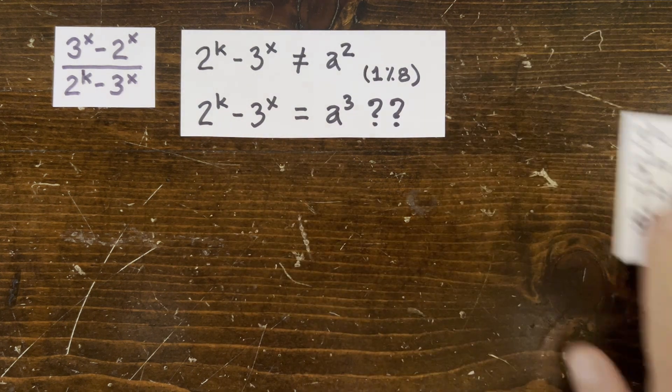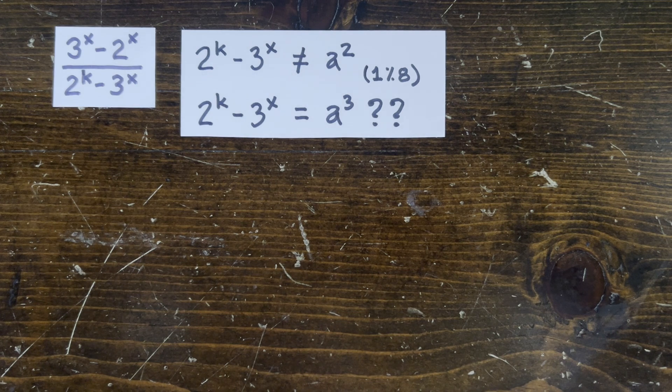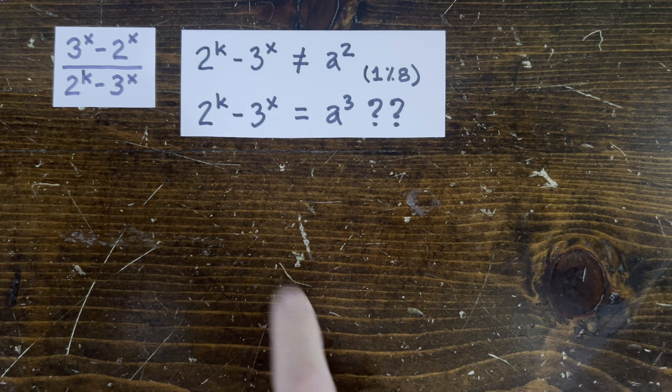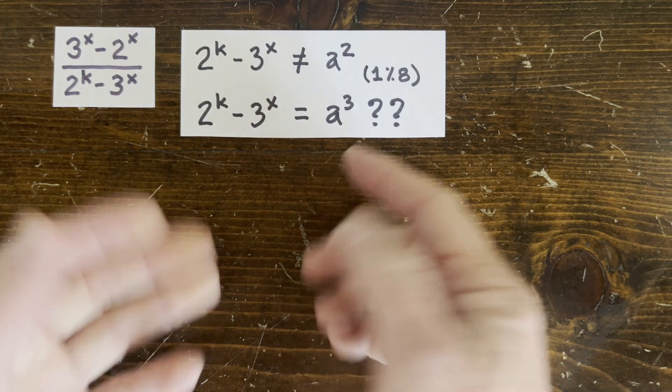Well, if we don't find any cubes, should we just keep looking using more values of k and x? Or should we try to prove that there's never ever going to be a cube?